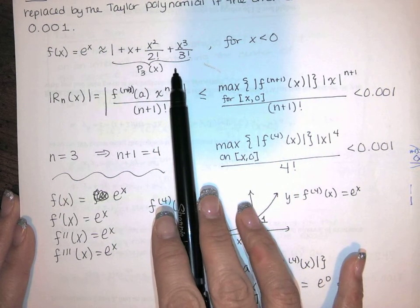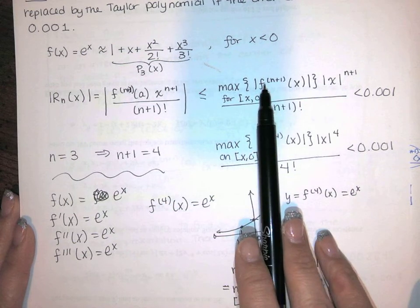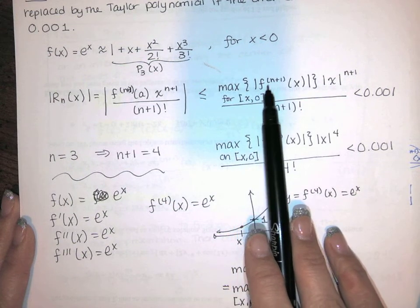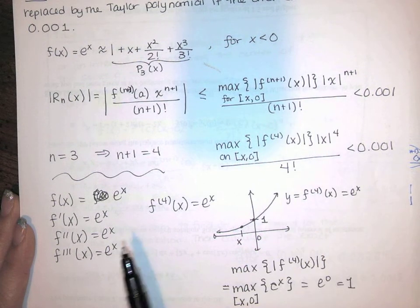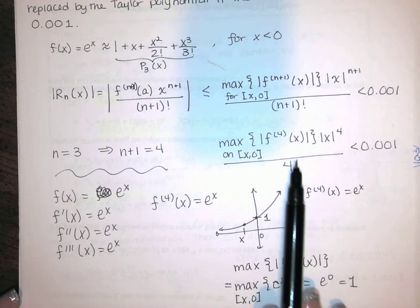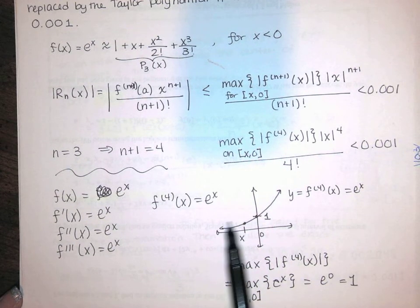And also since we knew that n is equal to 3, we were able to substitute that. We needed the maximum value of the 4th derivative. And this was an absolute value of x to the 4th, and that's a 4 factorial. So once we substituted that, it was just as easy as finding the maximum value of this function on this interval.